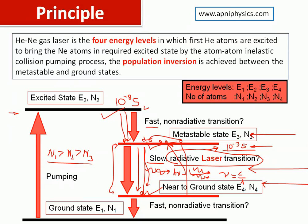Energy level E4 is very close to the ground state. This is a non-radiative and fast transition — all atoms which accumulate in E4 after the laser transition immediately jump into the ground state by collision with the walls of the tube in which they are kept. This is the non-radiative transition.